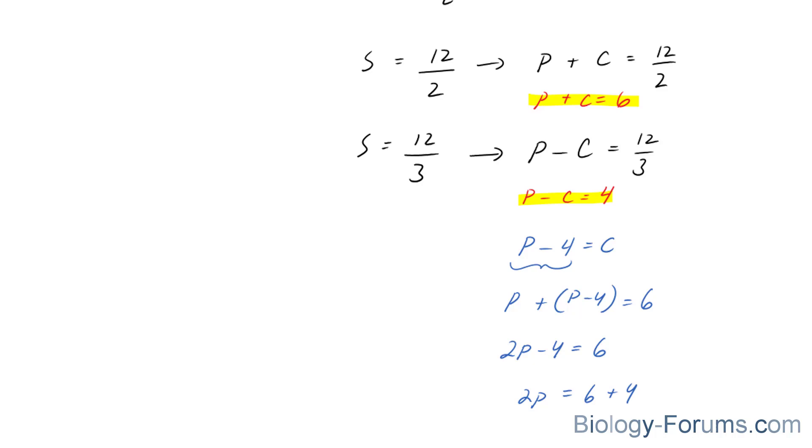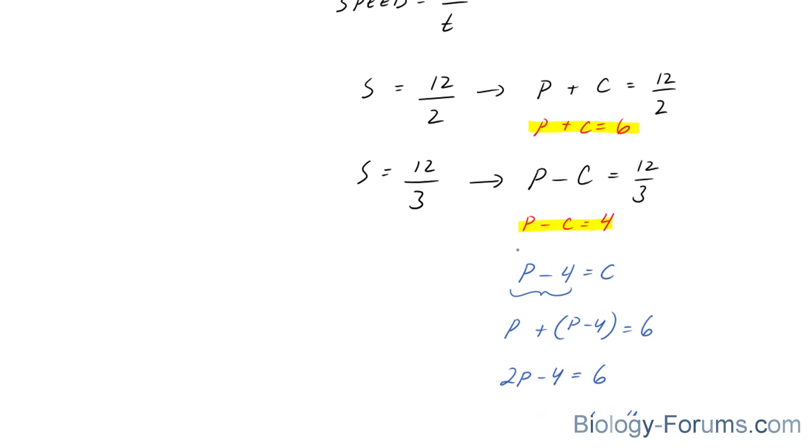And now let's find out the current speed. You can use any of these two formulas here, either this one or this one. I'm going to use this one. So P minus C is equal to 4. We found out that P is equal to 5 minus C. Bring the 4 over, bring the C over. 5 minus 4 is equal to positive C. And the current speed is 1 kilometer per hour.